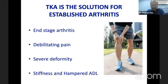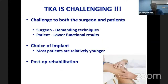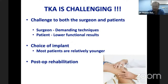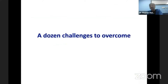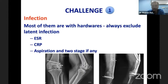Total knee arthroplasty is the solution for established end-stage arthritis with debilitating pain, severe deformity and stiffness, and compromised activities of daily living. Total knee arthroplasty in this setting is challenging — it is demanding for the surgeon technically, and patients may get lower functional results. The choice of implant is important because most patients are relatively younger. Post-operative rehabilitation is also important given issues with stiffness and muscle wasting. Let's talk about the dozen challenges to overcome in this clinical scenario.